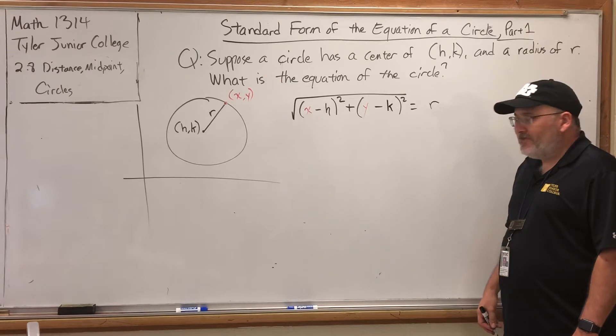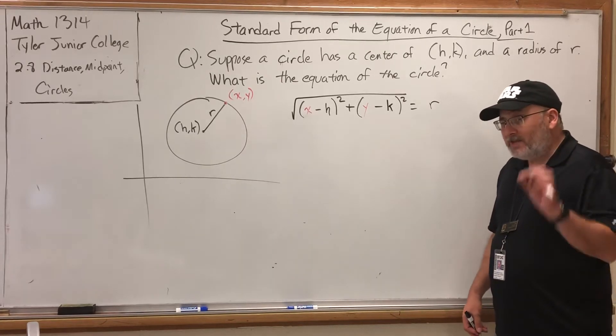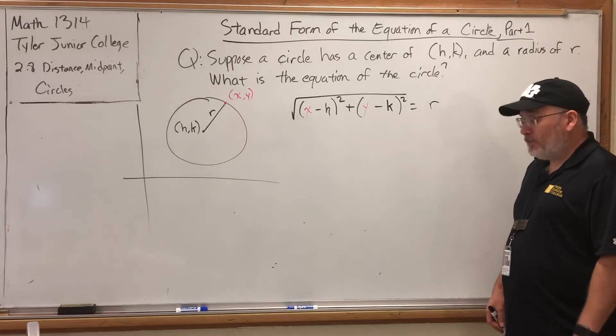So this needs to equal whatever the radius is. At this point, we technically have the equation of the circle. But we're going to make it look just a little bit prettier by squaring both sides.